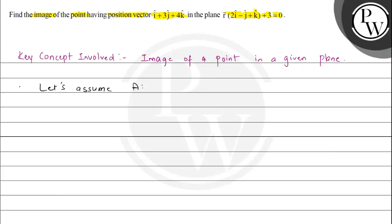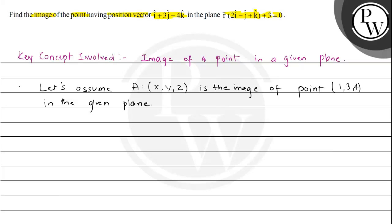We assume A(x, y, z) is the image of the point (1, 3, 4) in the given plane. Since A is the image, the midpoint of these two points must lie on the plane, which means ((x+1)/2, (y+3)/2, (z+4)/2) must lie on the plane.